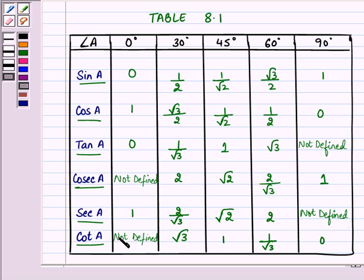For example, we have to now substitute the value sin 60°. So sin 60° will be √3/2. Cos 30° will be √3/2. Sin 30° is 1/2 and cos 60° is 1/2.